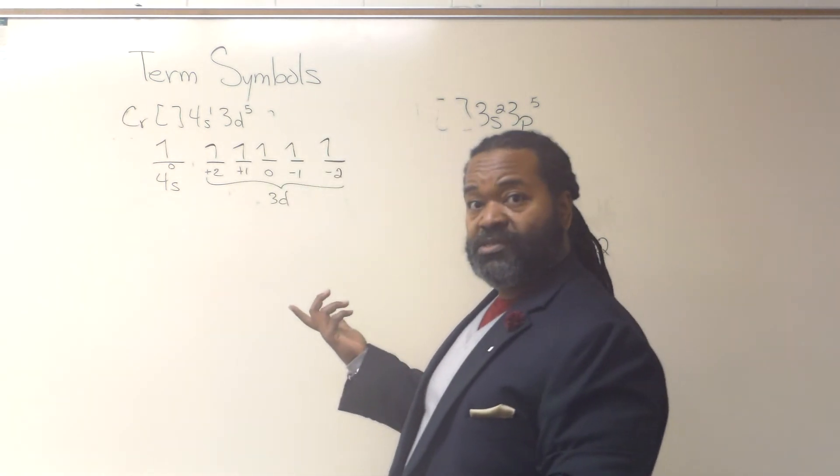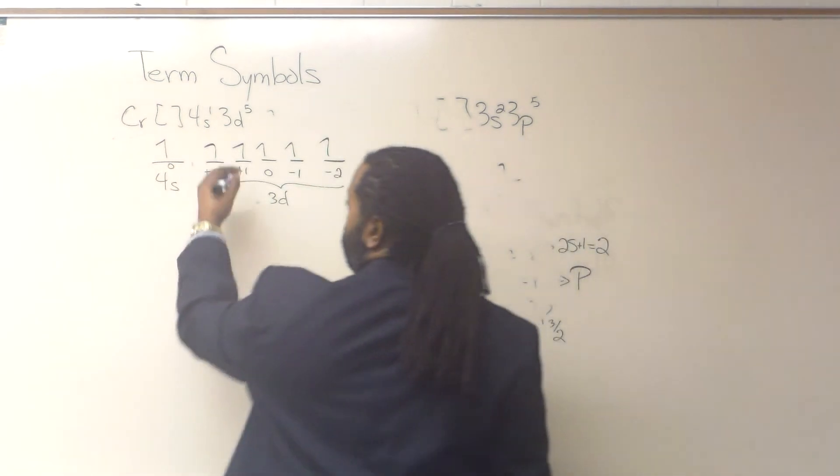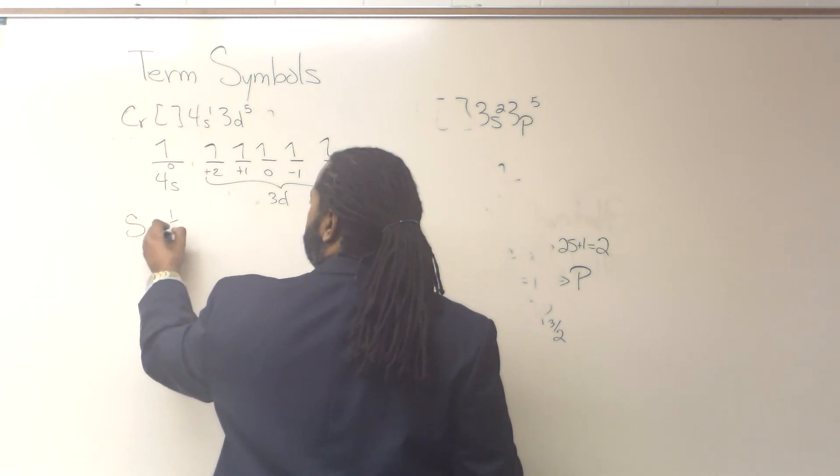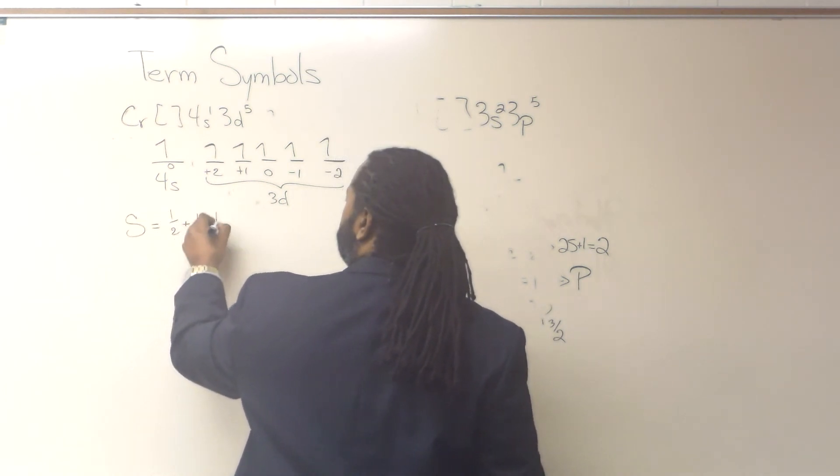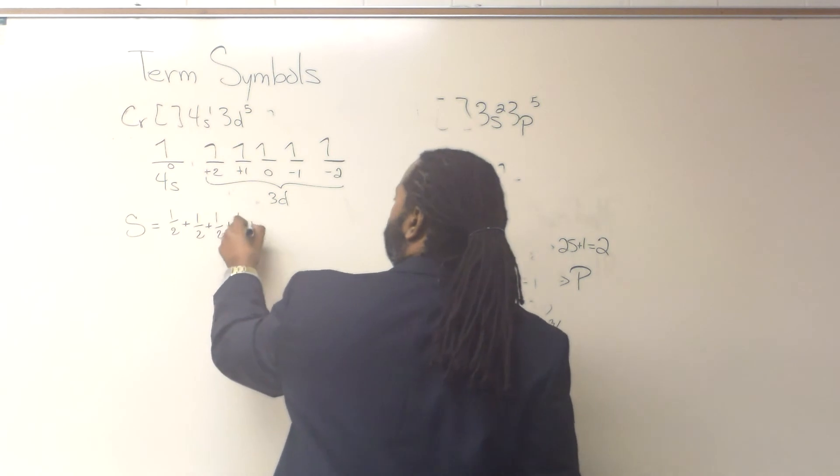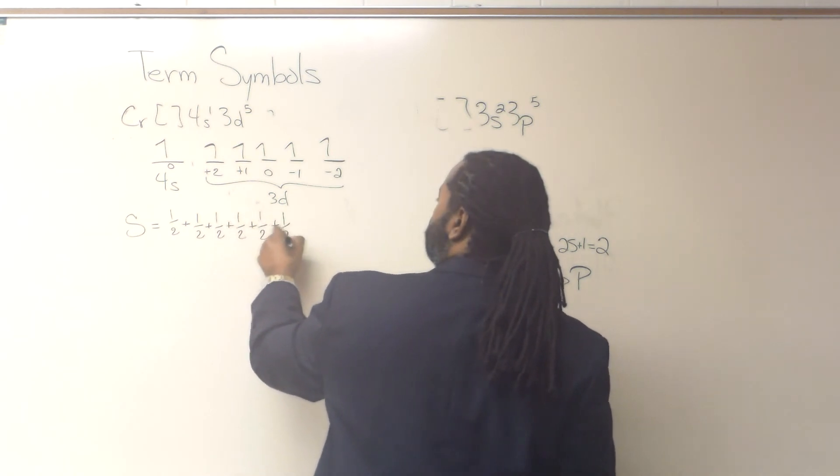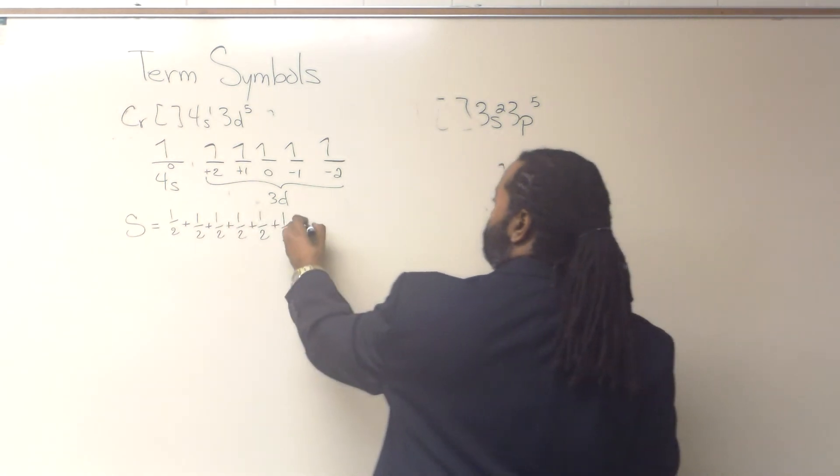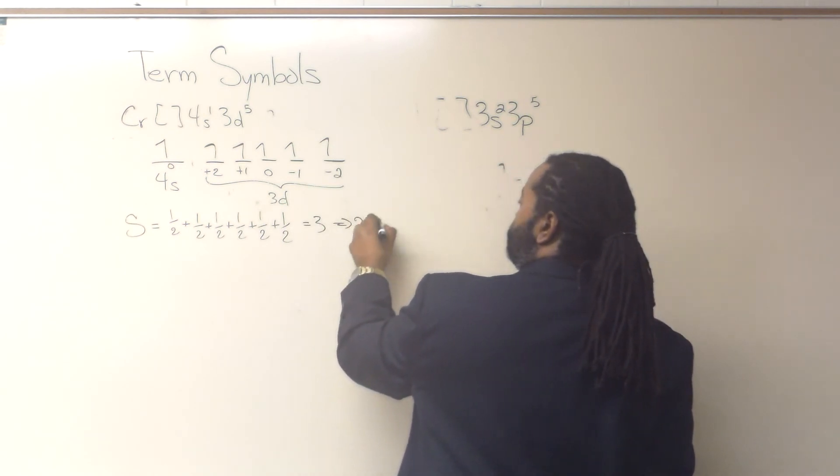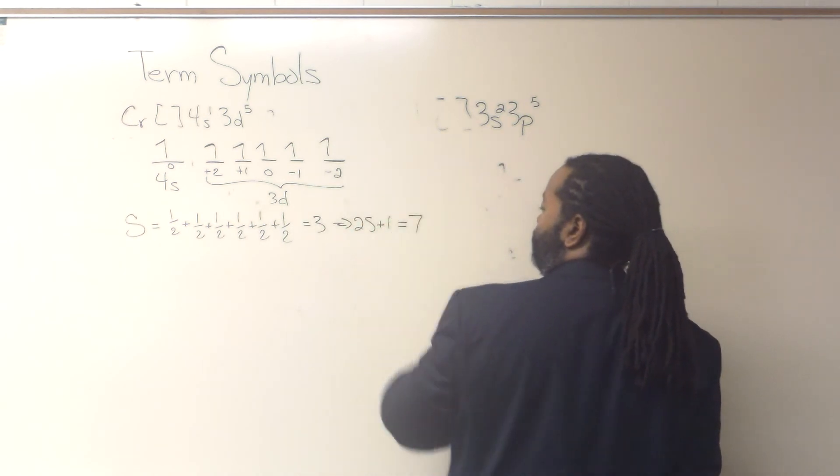So now in this case, to find the value for s, we would add up all of these. 1, 2, 3, 4, 5, 6. 6 halves is just 3, which means that 2S plus 1 is actually going to be 7.